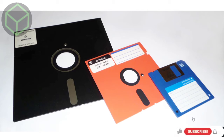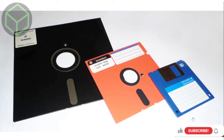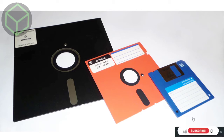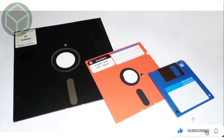Floppy disks store much less data than a CD-ROM disk or USB flash drive. A special type of floppy disk made in the late 1980s could store only 2.88 MB of data and did not become popular. Larger-size floppy disks became available in the 1990s. The two most popular were the Zip drive and the Jaz drive, both made by Iomega.